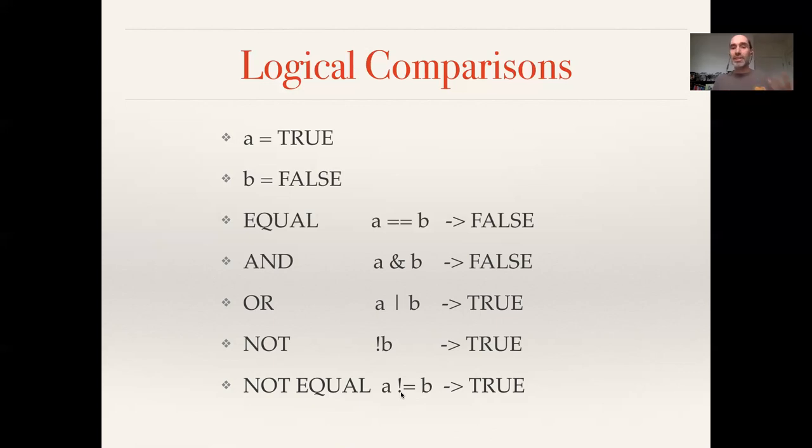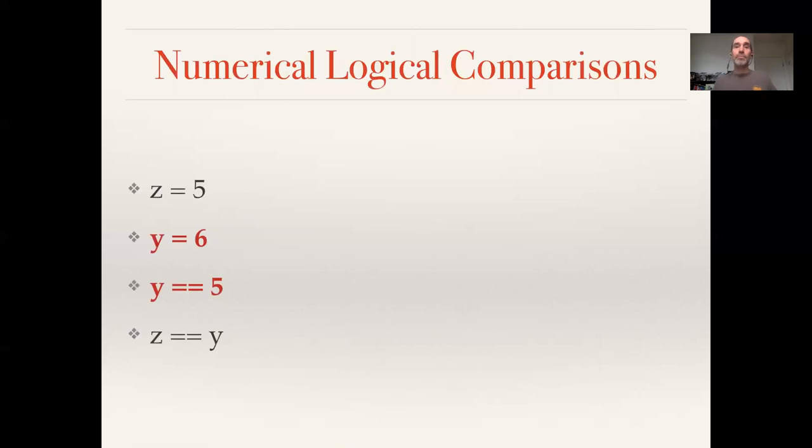So in addition to doing logical comparisons with these logical bits, we can also do logical comparisons with numbers. So here we might set, as before, Z was 5, Y was 6. I can then ask, does Y equal 5? Which is false, because Y equals 6. And here again, I've highlighted this in red to emphasize this distinction between assignment and comparison.